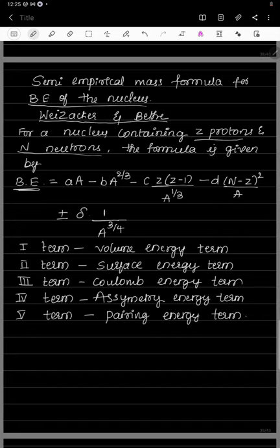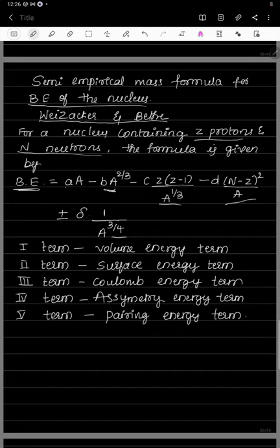In the binding energy formula, almost all terms are negative except the first term. All these other terms are negative, which indicates they are decreasing the binding energy of the nucleus. The negative sign indicates these terms reduce the binding energy, except the first term, which is small a into capital A.